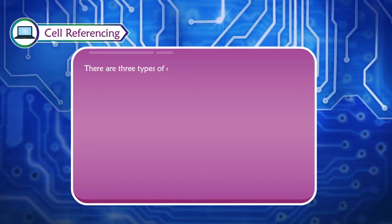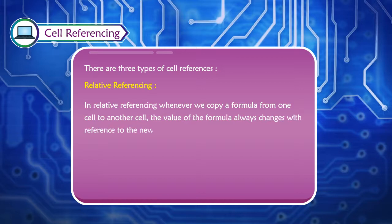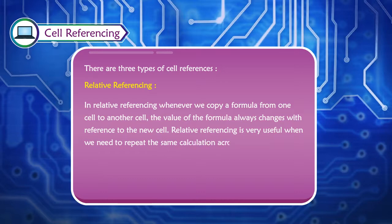There are three types of cell referencing. The first is Relative Referencing. In relative referencing, whenever we copy a formula from one cell to another cell, the value of the formula always changes with reference to the new cell. Relative referencing is very useful when we need to repeat the same calculation across multiple rows or columns.